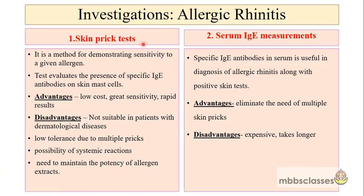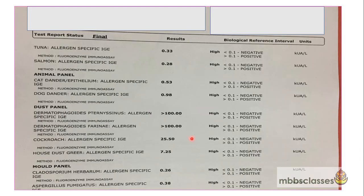To overcome the shortcomings of the in vivo skin prick test, in vitro serum IgE measurement can also be done, and it is useful in the diagnosis of allergic rhinitis. The advantage is that it eliminates the need for multiple skin pricks, but the disadvantages are that it is expensive and takes a longer period of time. This test measures IgE for individual allergens in a blood test - for example, a common one is dermatophagoides, which is the dust mite.